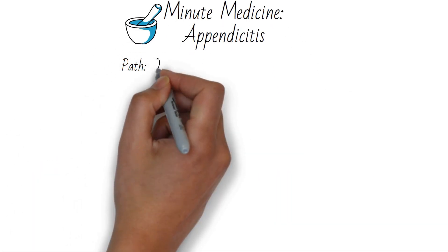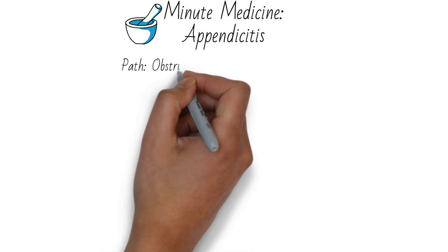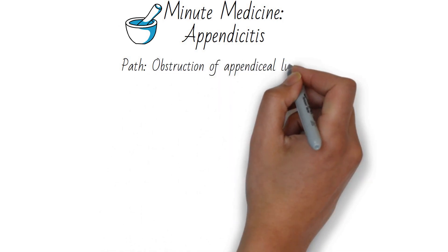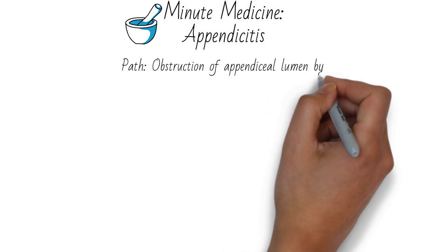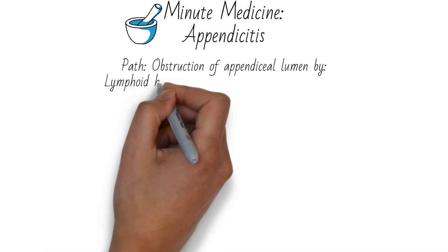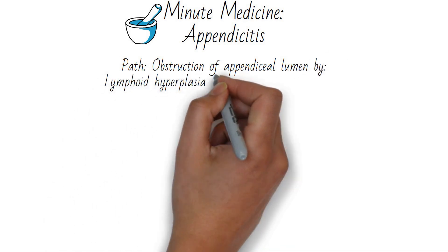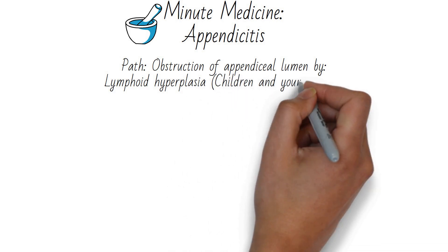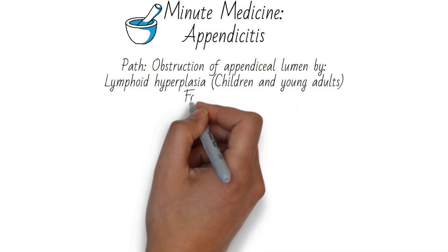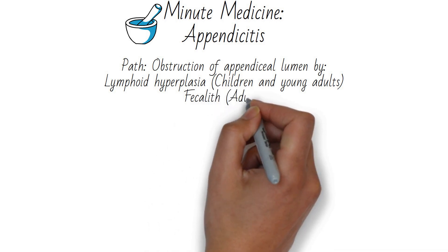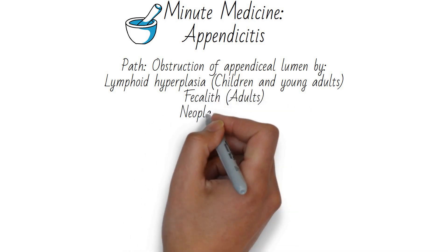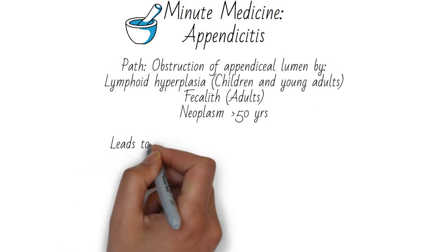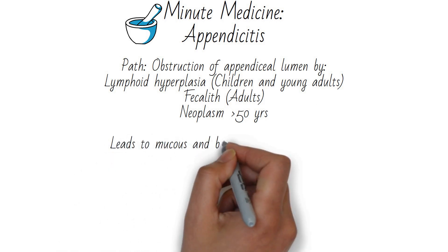In this video, we're going to talk about appendicitis. Appendicitis is caused when the appendiceal lumen is obstructed. This can occur in young people from lymphoid hyperplasia, sometimes with a preceding viral illness, or in adults with a fecalith — or a good old-fashioned poopstone — as the source of obstruction. Rarely, a tumor can be the source of obstruction, which usually occurs in adults older than 50.